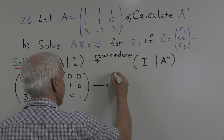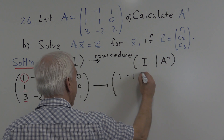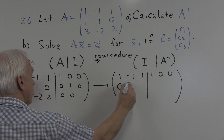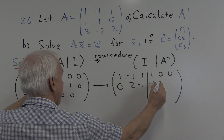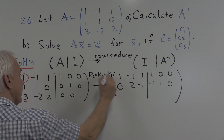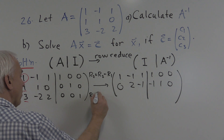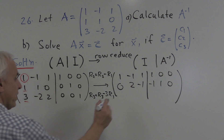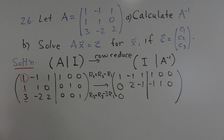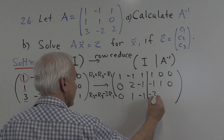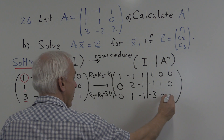So let's do that. I'm going to keep that first row where it is: 1, minus 1, 1, and then 1, 0, 0. I'm going to take the second row and subtract the first row. That gives 0, 2, minus 1, minus 1, 1, 0. The new row 3 is going to be the old row 3 minus 3 times row 1. So this row minus 3 times the first one gives 0 in the first position. Minus 2 minus 3 times minus 1 is plus 3, total of 1. Then 2 minus 3 times 1 is minus 1. 0 minus 3 times 1 is minus 3. 0 minus 3 times 0 is 0. And 1 minus 0 is 1.